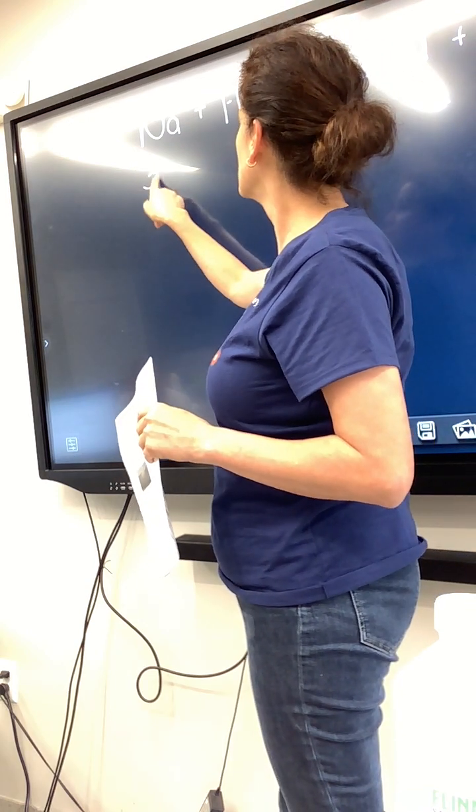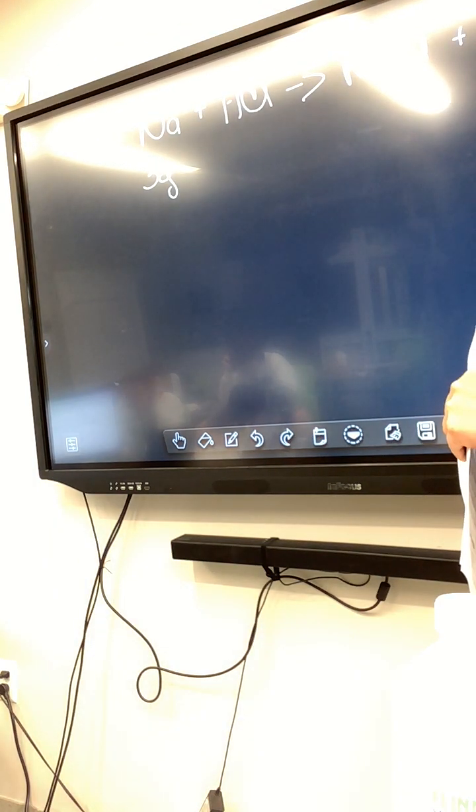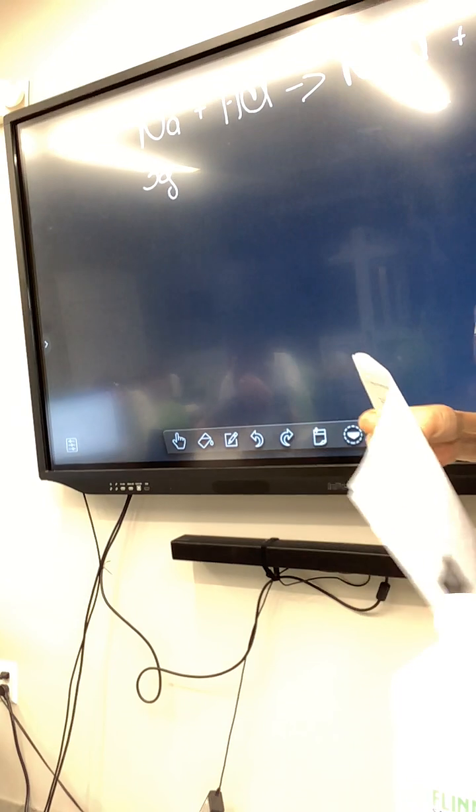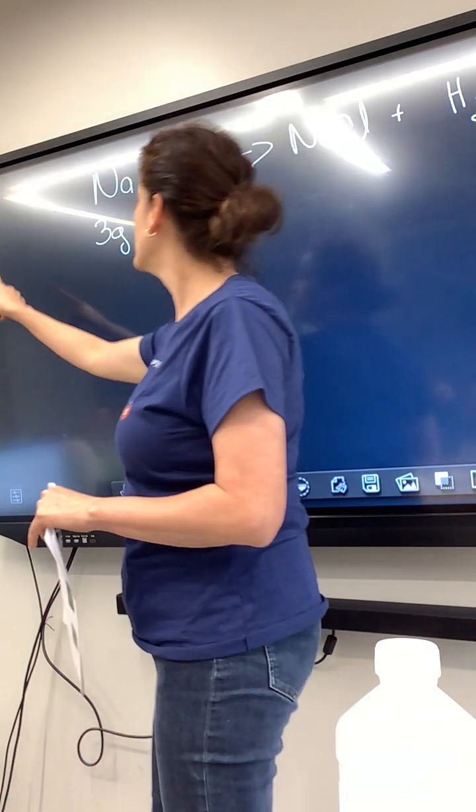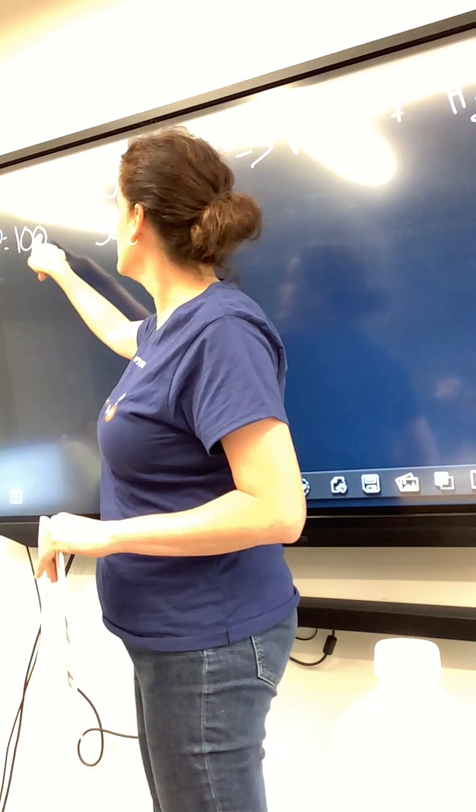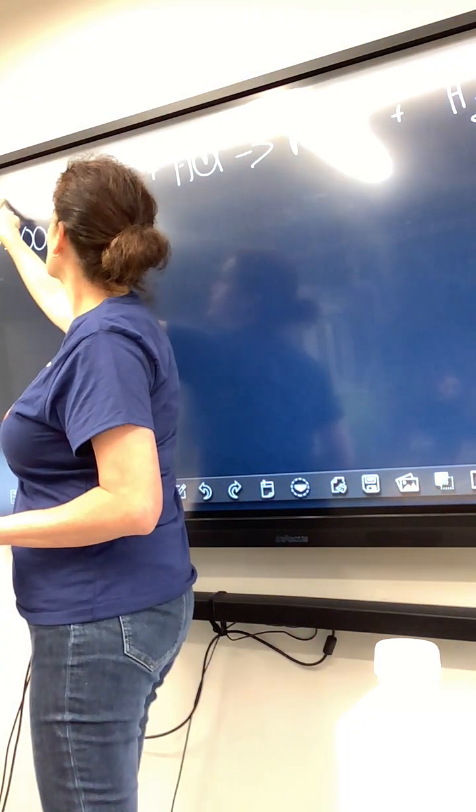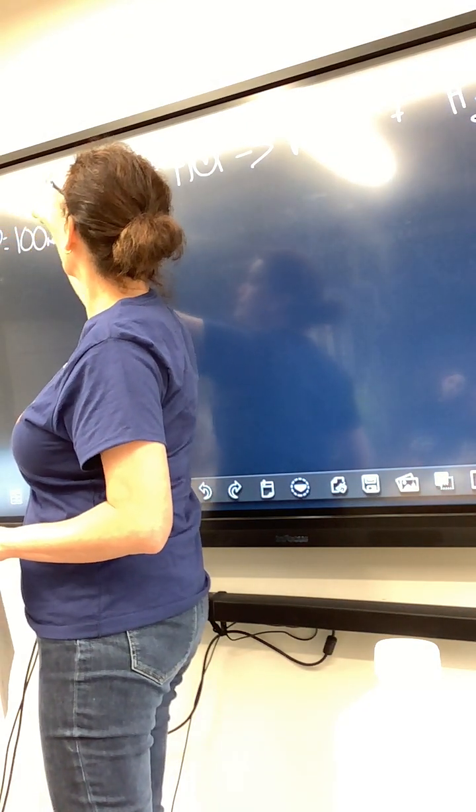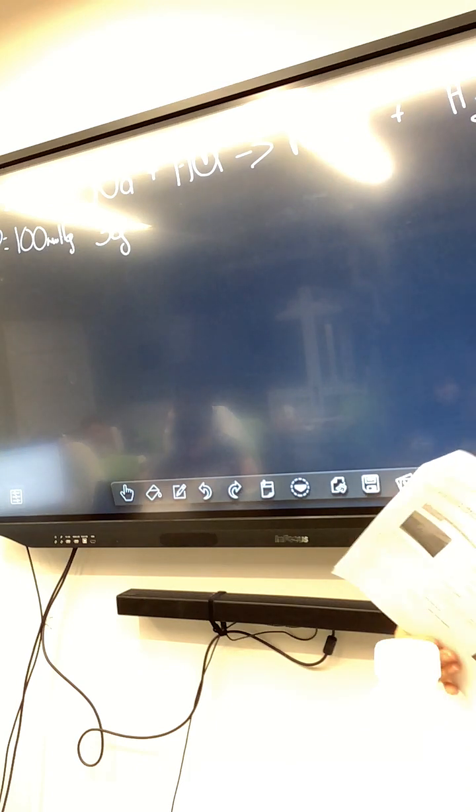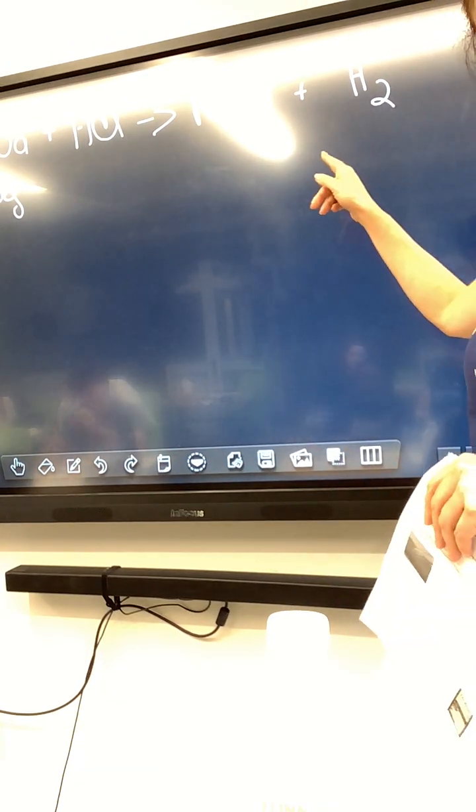You're going to have 3 grams of sodium chloride. I mean, of sodium. And you are going to be at a pressure of 100 millimeters of mercury. And the temperature is going to be 25 degrees C. And we want to know the volume of hydrogen that is being made.